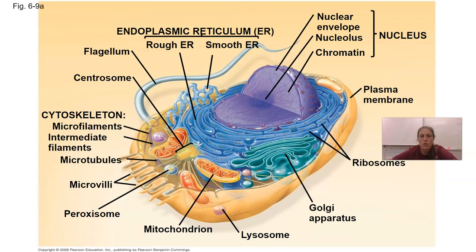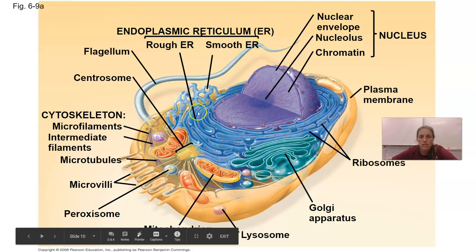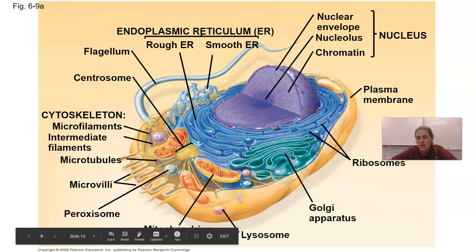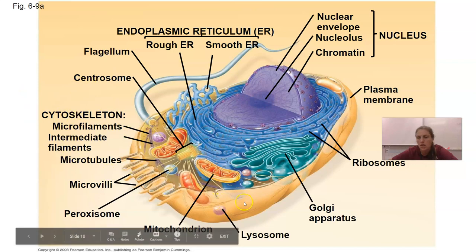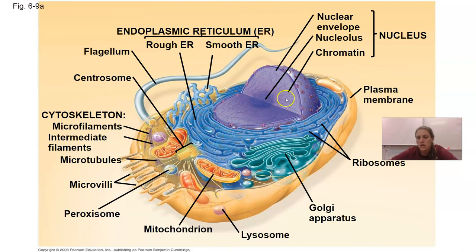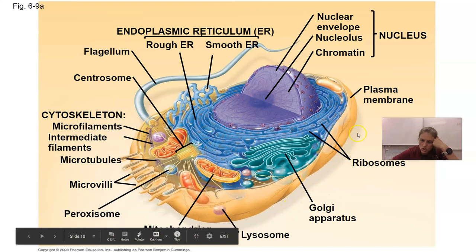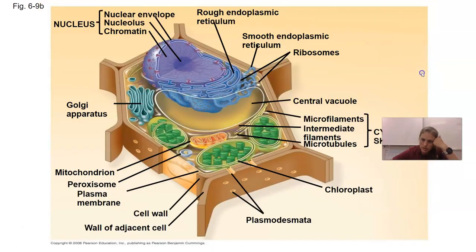Here is an animal cell. We can see the endoplasmic reticulum, and we know it's an animal cell because it's typically more circular. There's a flagellum to make it move. You can see the cytoskeleton, which is like the bones of the cell and helps protect it. There's a nucleus holding all of our genetic information — when it's stringy and together like that, we call it chromatin. We've got a plasma membrane, ribosomes for making proteins, and Golgi bodies.